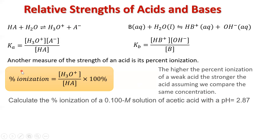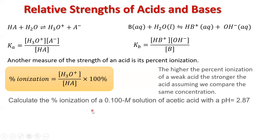Let's calculate the percent ionization of a 0.100 molar solution of acetic acid with a pH of 2.87. We need the hydronium ion concentration at equilibrium, and we need the acid concentration. We're given the acid concentration, but we're not directly given the hydronium ion concentration — we are given the pH. We know we can calculate the hydronium ion concentration from the pH. So our first step would be to calculate the hydronium ion concentration, and then we can calculate the percent ionization.